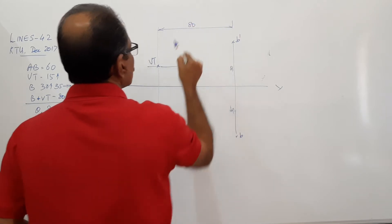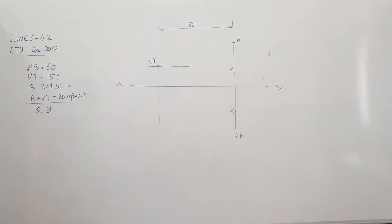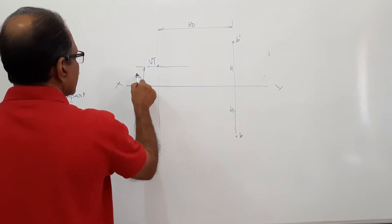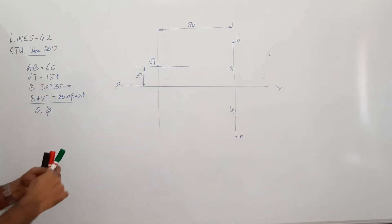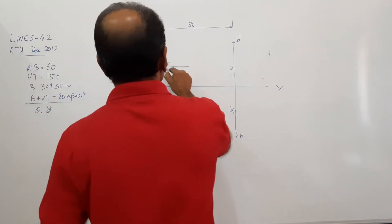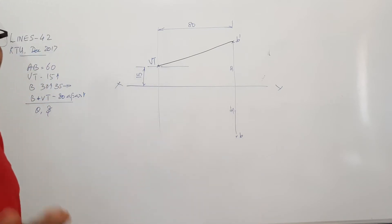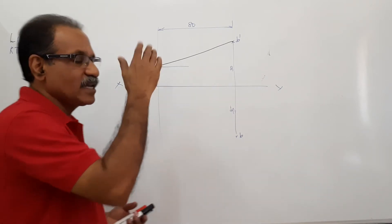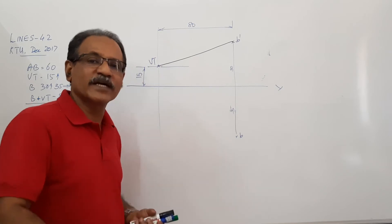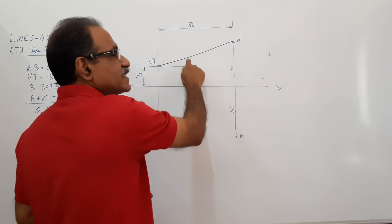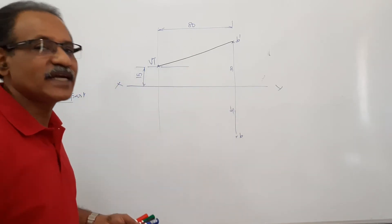This is given in the question. This is 15. You have got VT. Connect VT to B', because B' is elevation of the end, on the extension of the elevation. VT is the elevation. B dash is the elevation.